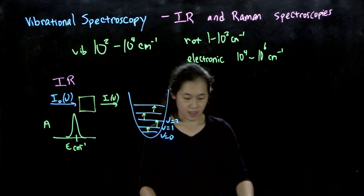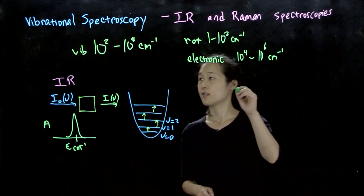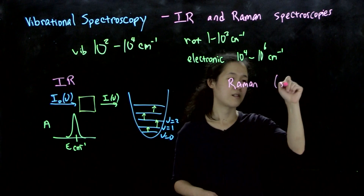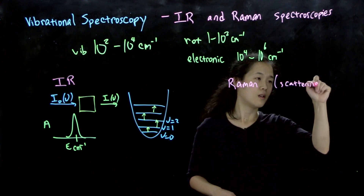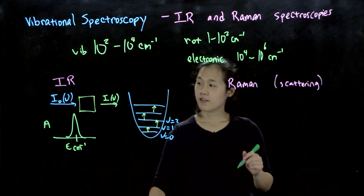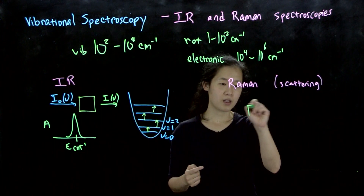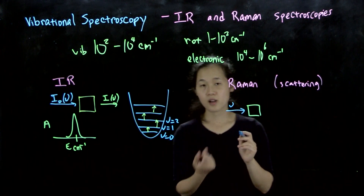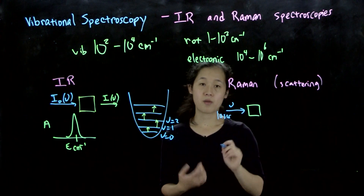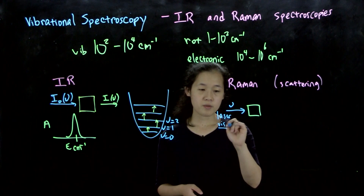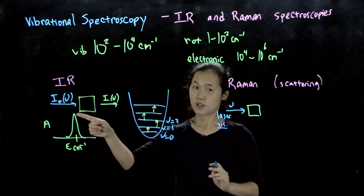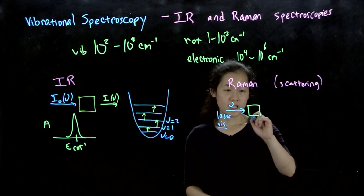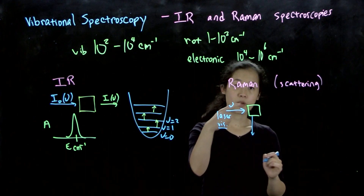Raman is different — it's a scattering technique. Instead of going through one beam, here's your sample and you have a beam of light at some frequency. Usually this is a laser — often in Raman microscopes these are in the visible, so visible light. This is going to be much higher energy than the vibrational transition, so we're not directly exciting between vibrational transitions. Instead, we measure light that's scattered off. This is a perpendicular measurement.